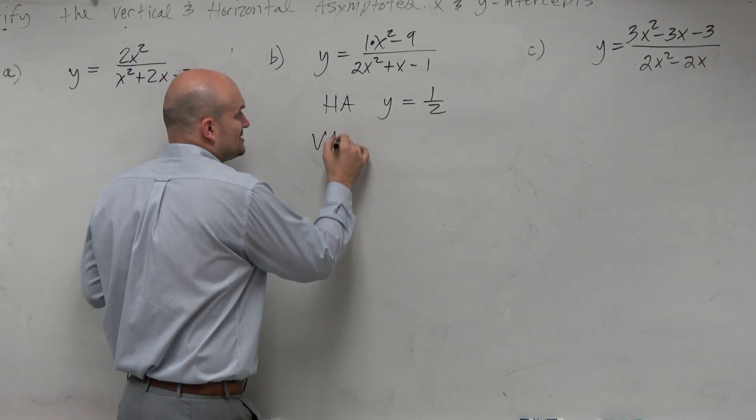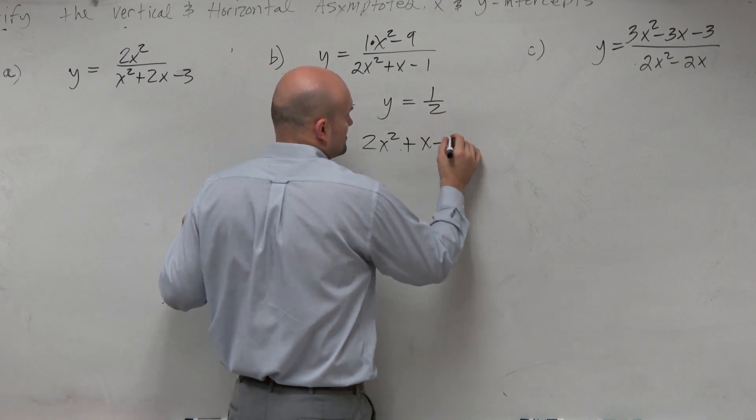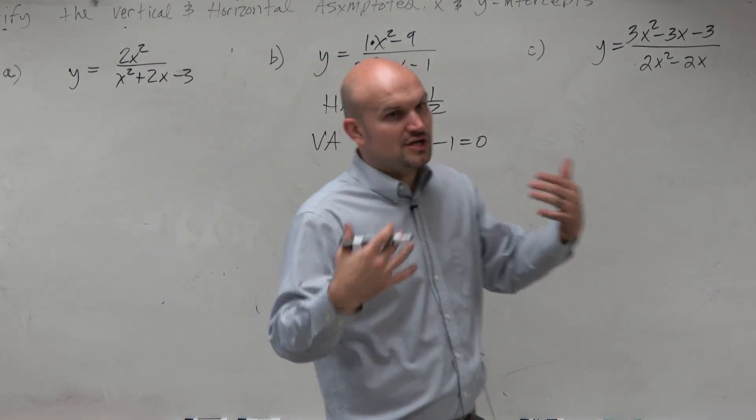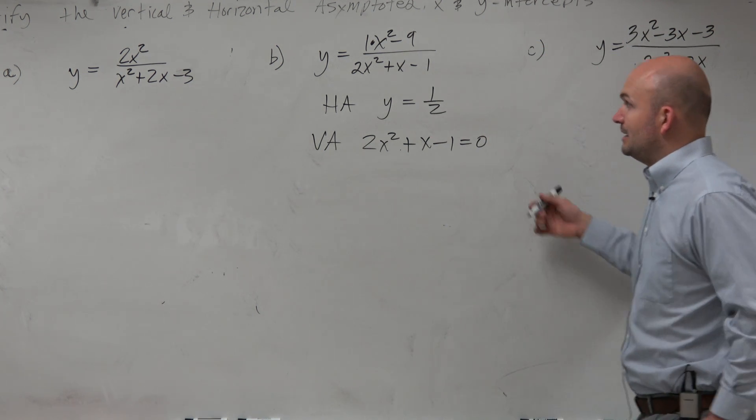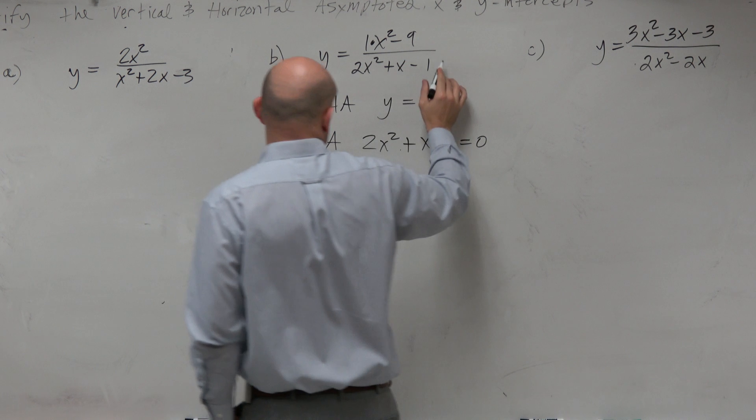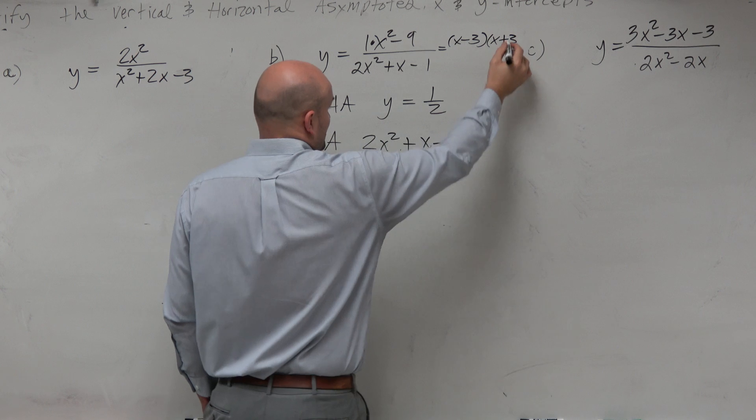But the vertical asymptote is the same thing we've been doing for like a million examples. Set the denominator equal to 0 and solve. Now, obviously, we want to make sure that there's no holes that are going on, right? So we would want to make sure whatever I have here cannot be factored out with x minus 3, x plus 3.